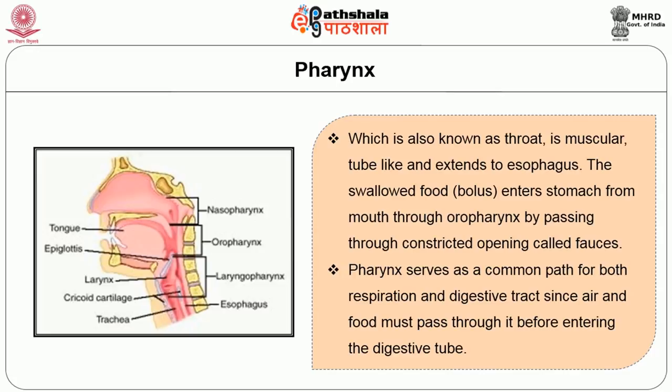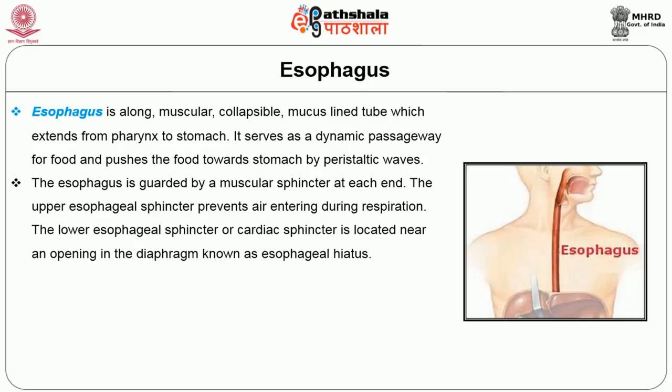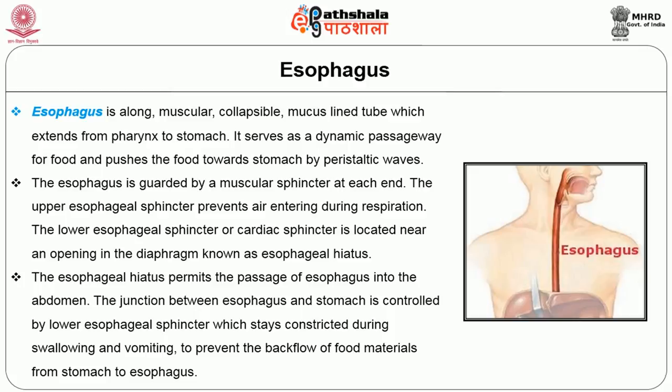The esophagus is a long, muscular, collapsible, mucus-lined tube which extends from the pharynx to the stomach. It serves as a dynamic passageway for food and pushes food towards the stomach by peristaltic waves. The esophagus is guarded by muscular sphincters at each end. The upper esophageal sphincter prevents air entering during respiration. The lower esophageal sphincter, or cardiac sphincter, is located near an opening in the diaphragm known as the esophageal hiatus, which permits the passage of the esophagus into the abdomen.